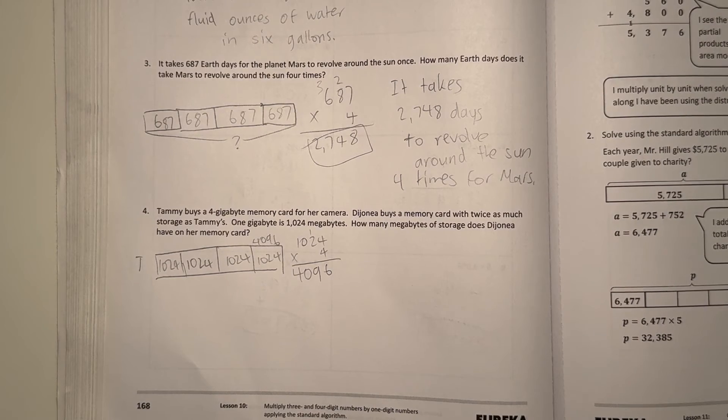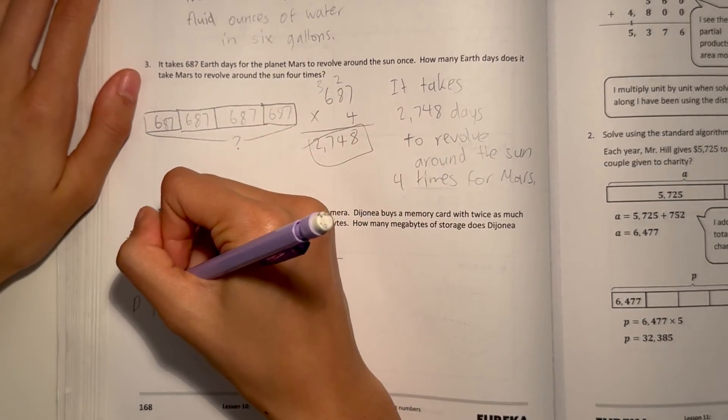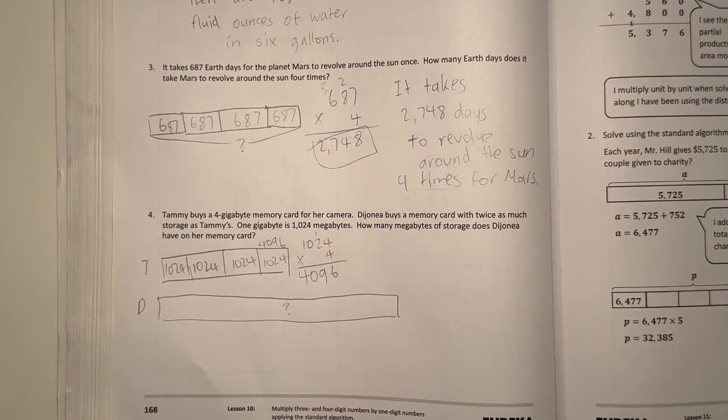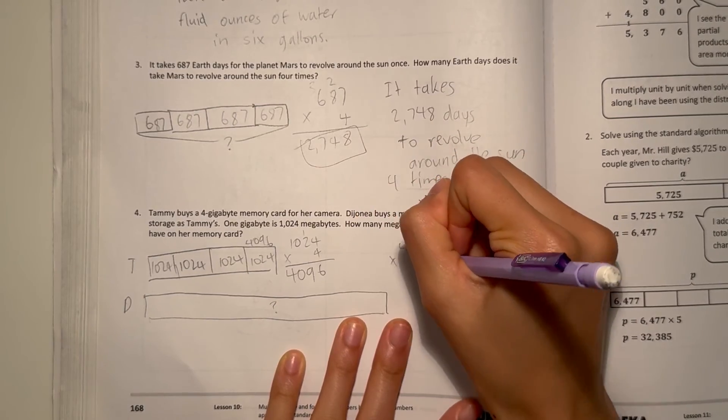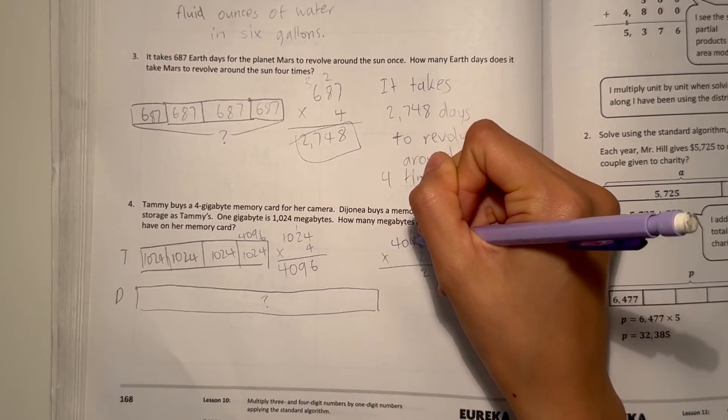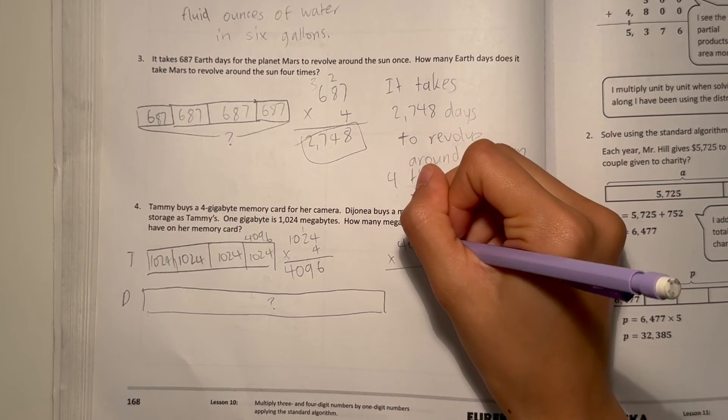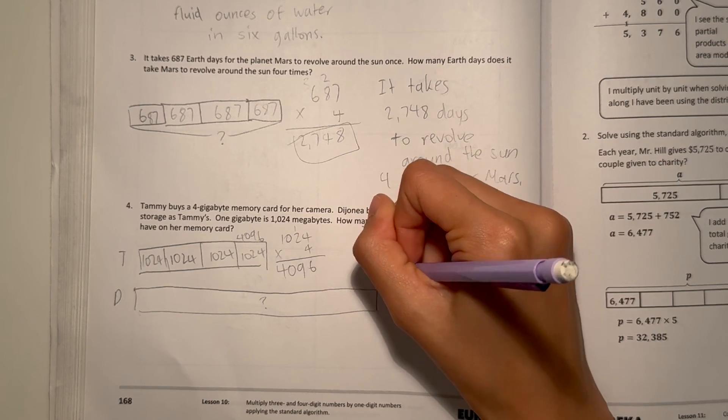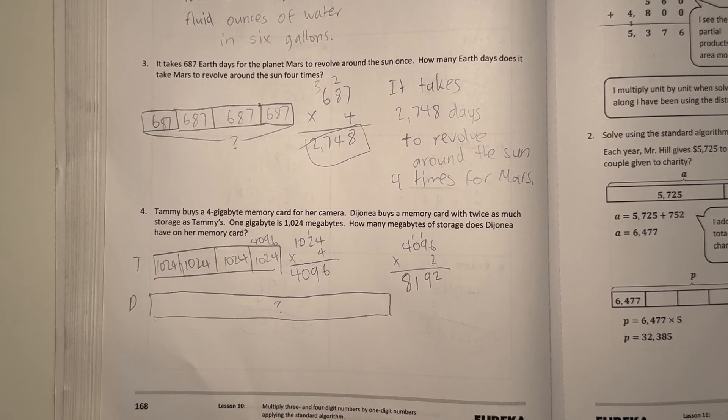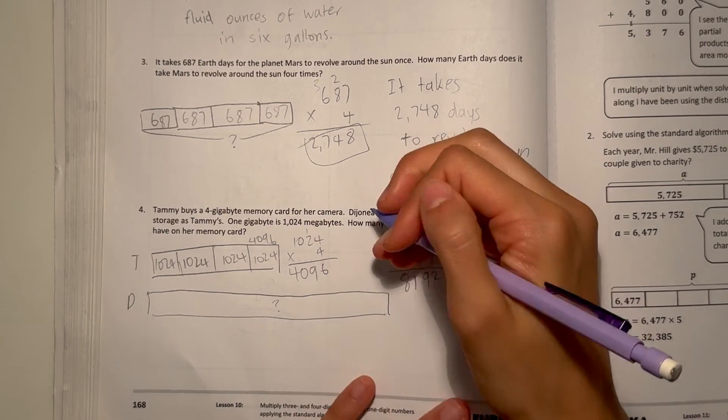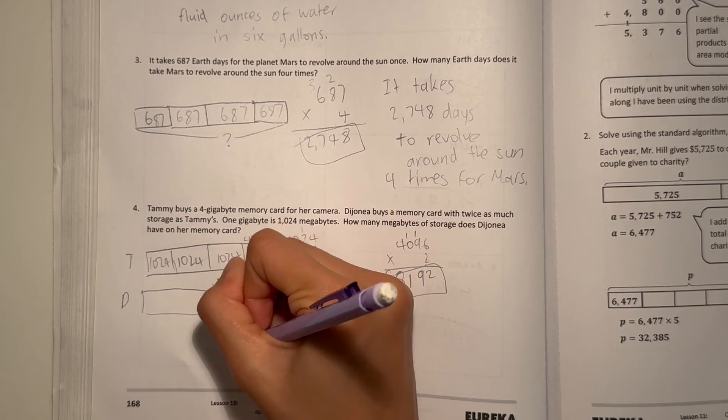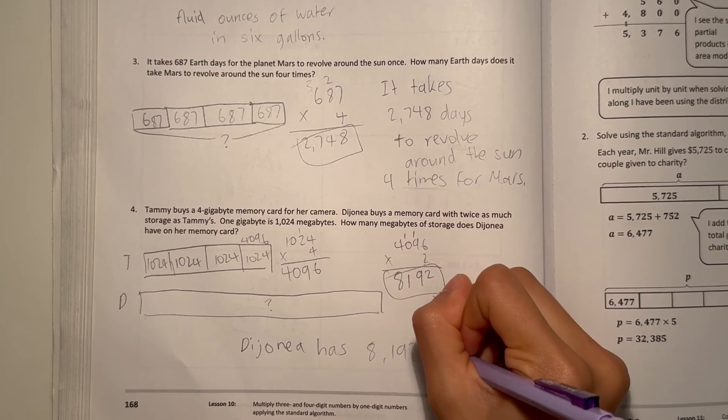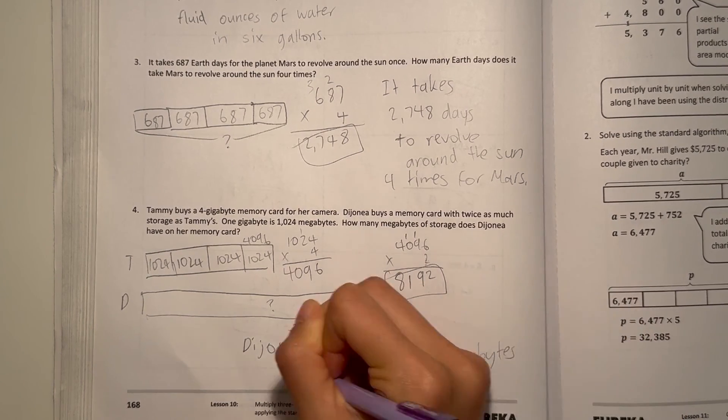But Dijonia has twice as much as Tammy's. So D for Dijonia. That means she has not much, but like twice the amount. So how much does she have? 4,096 times 2. 6 times 2 is 12. 9 times 2 is 18, plus 1 is 19. 2 times 0 is 0, plus 1 is 1. That's 8. So our answer, 8,192. So that means Dijonia has 8,192 MB of storage.